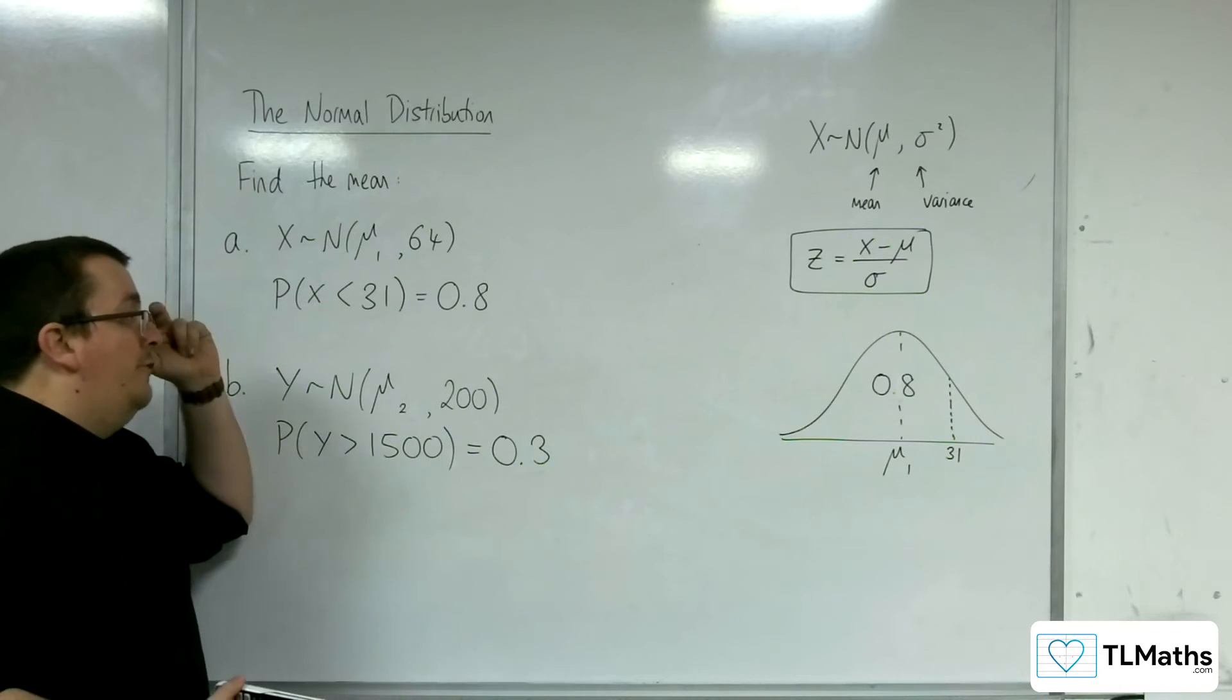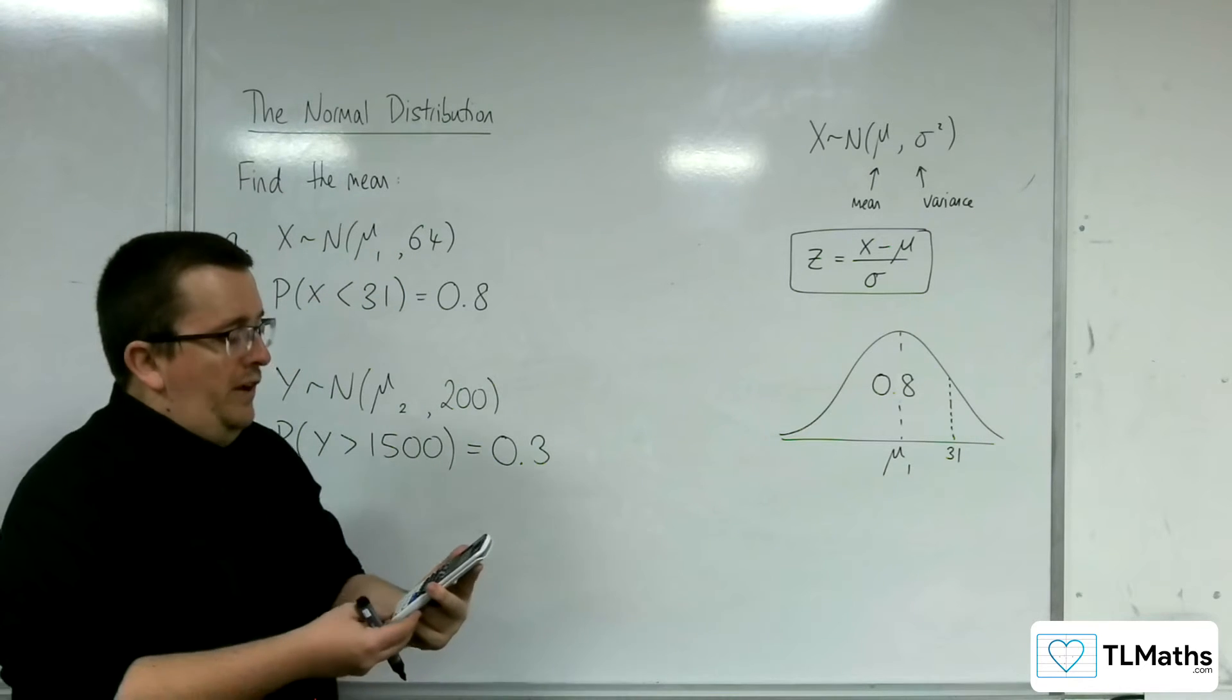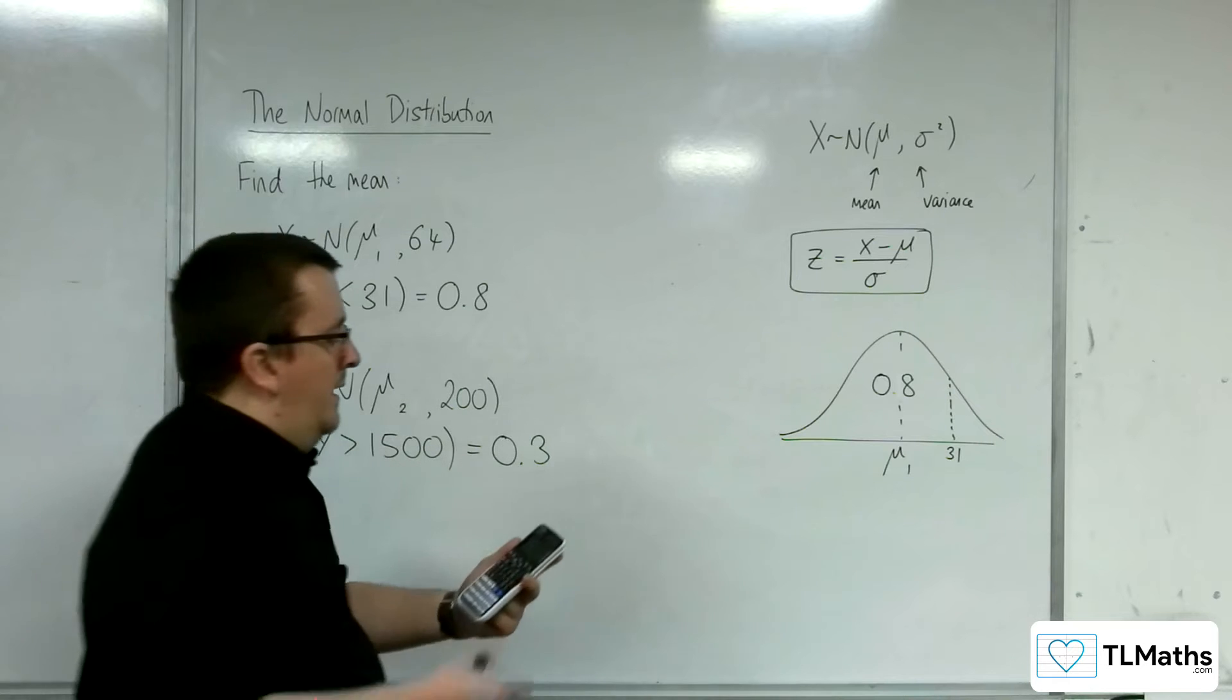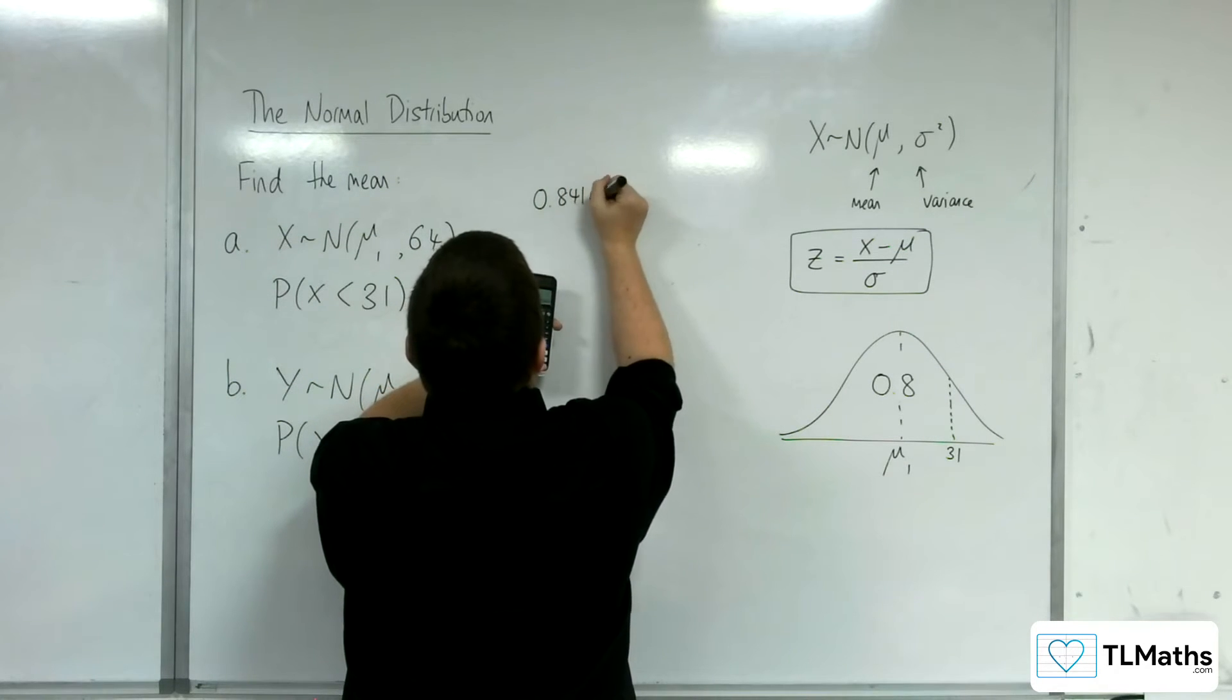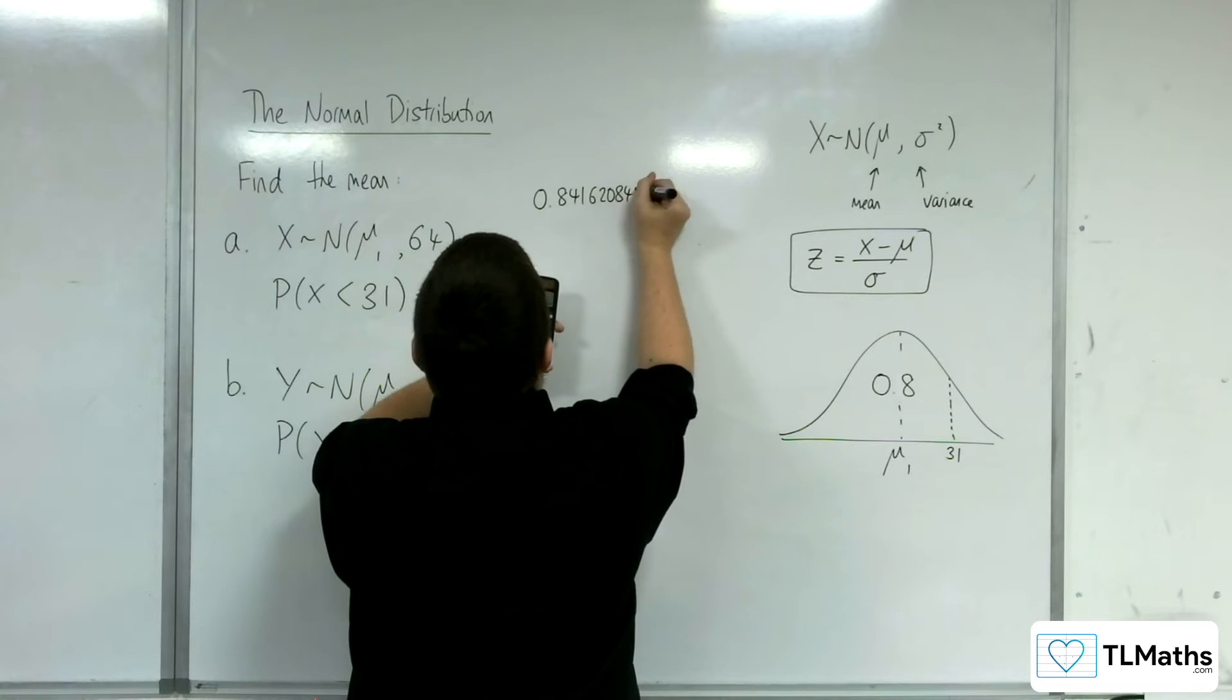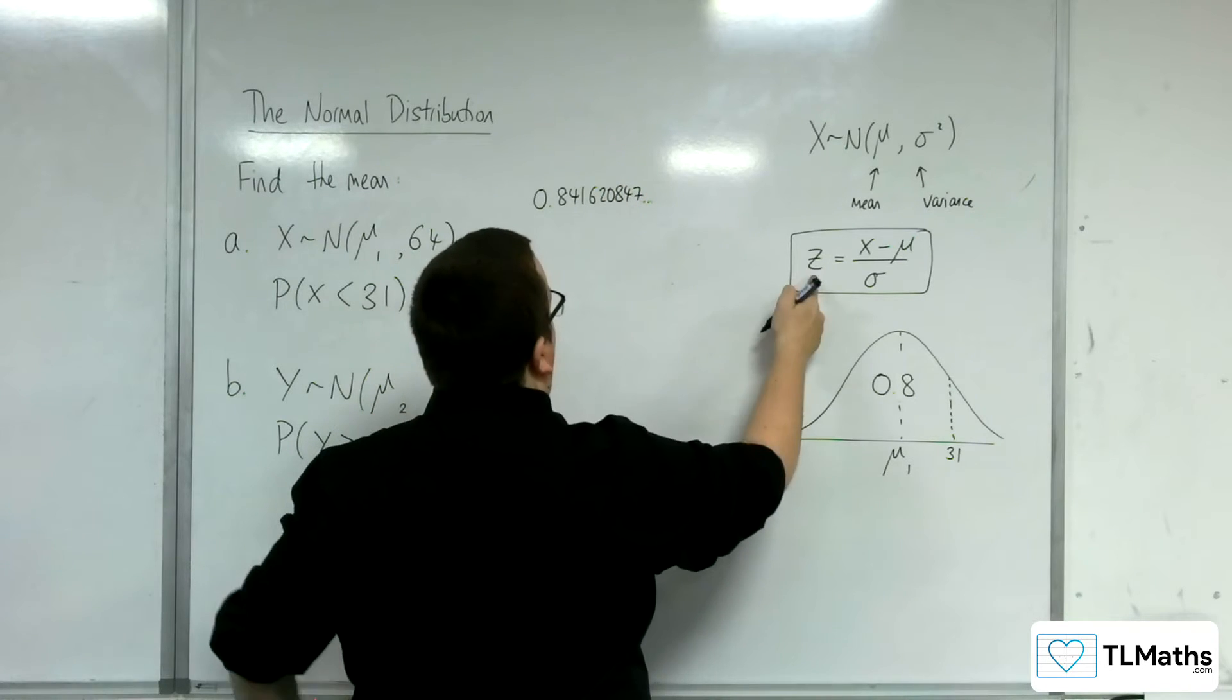Your calculator can't do that for you, I'm afraid. So we should get inverse normal of 0.8, 1, 0 is 0.841620847. That's your z value.